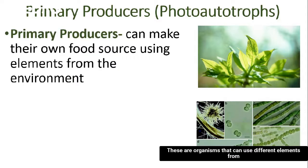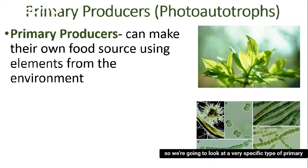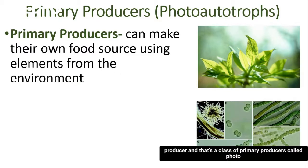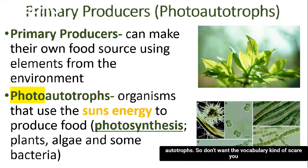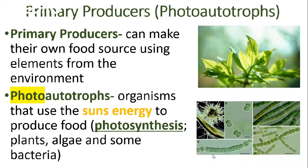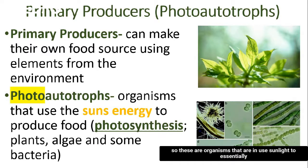Primary producers are organisms that can use different elements from the environment — whether it's sunlight or different chemicals from the water — to essentially produce their own food source. We're going to look at a specific type called photo-autotrophs. Breaking down the word: photo refers to light, auto is self, and trof means to feed. So these are organisms that use sunlight to feed themselves via photosynthesis.